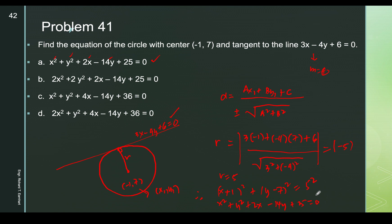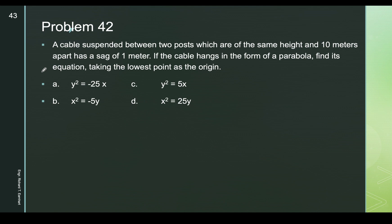Checking: 1 + 49 = 50, and 50 − 25 = 25, confirming the answer is letter B. Problem 42: a cable suspended between two posts of the same height and 10 meters apart has a sag of 1 meter. The cable hangs in the form of a parabola. Find its equation taking the lowest point as the origin.